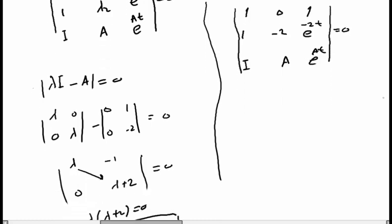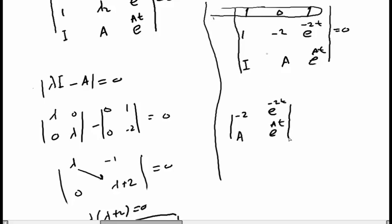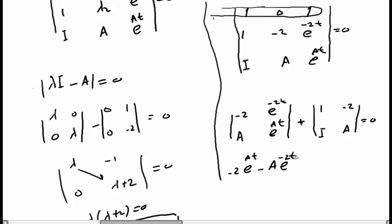To solve, we expand along the first row. The first term is zero times its minor, plus one times its minor, which is the determinant of the 2×2 submatrix containing I, A, and e^(At). Expanding this gives: −2·e^(At) — which is Φ(t) — minus A·e^(−2t) plus 2I·A equals zero. Don't forget: Φ(t) is the term we need to find.